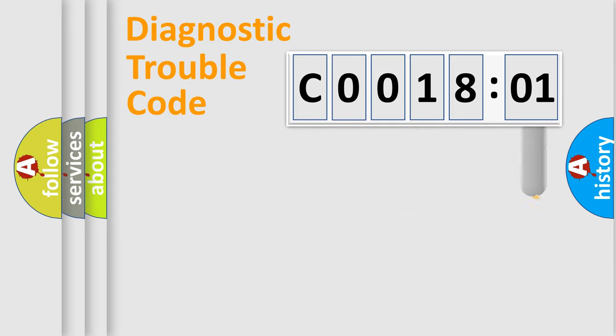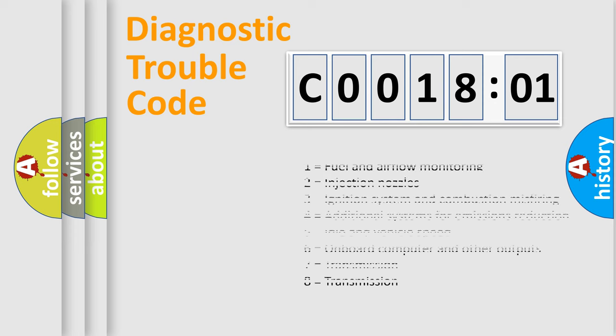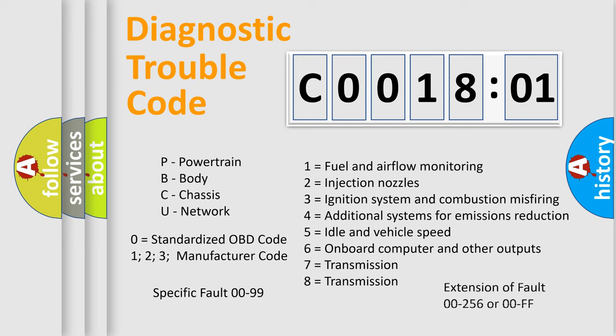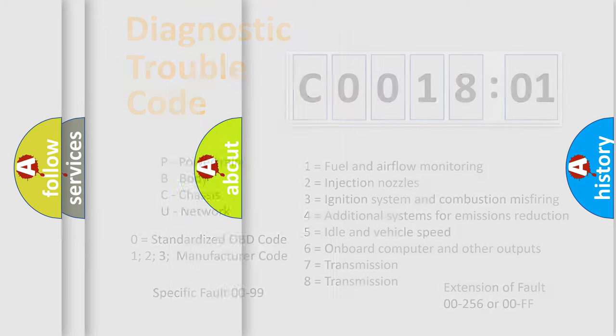The add-on to the error code serves to specify the status in more detail, for example, a short to ground. Let's not forget that such a division is valid only if the second character code is expressed by the number zero.